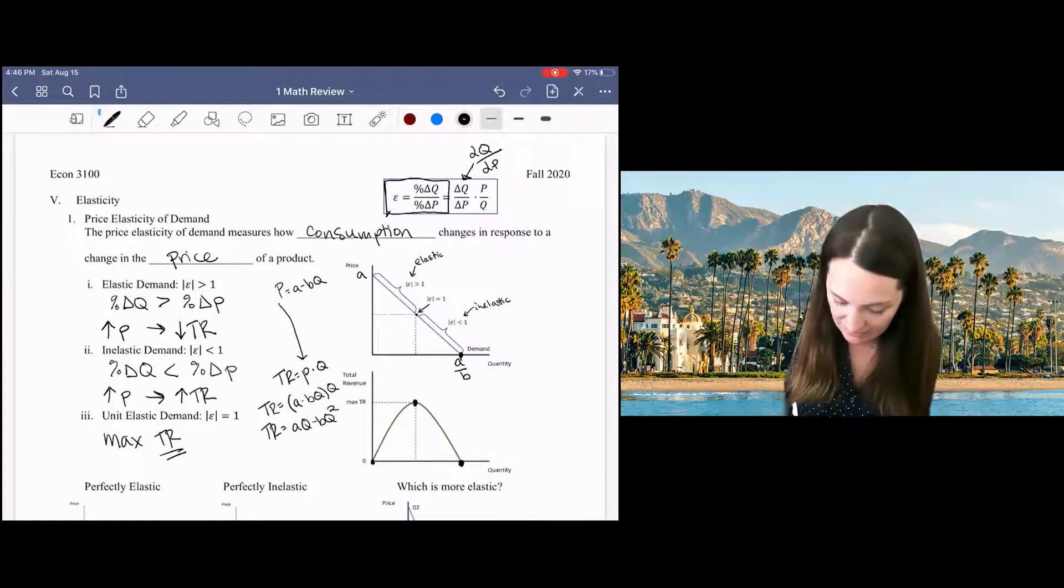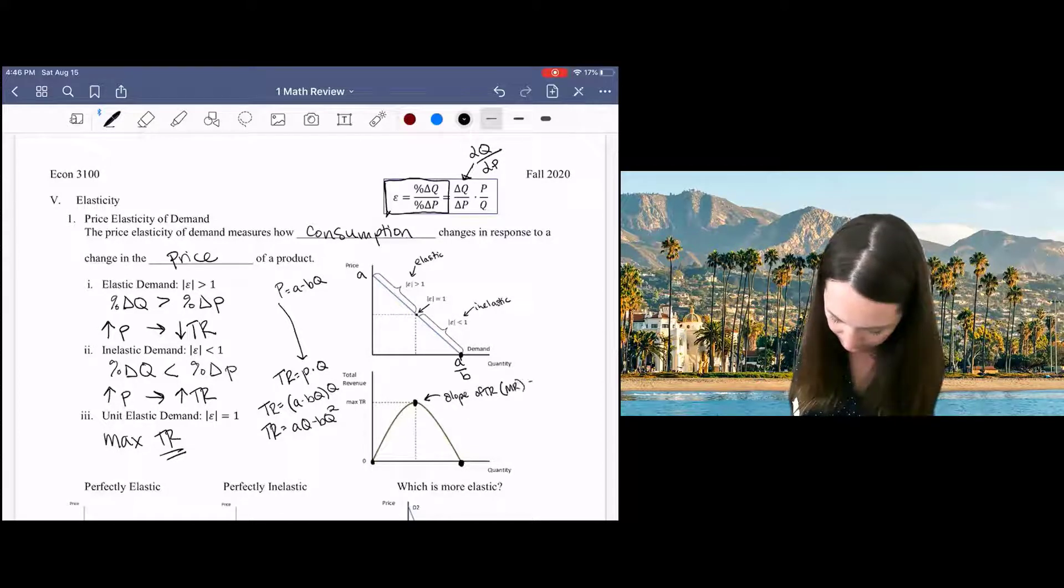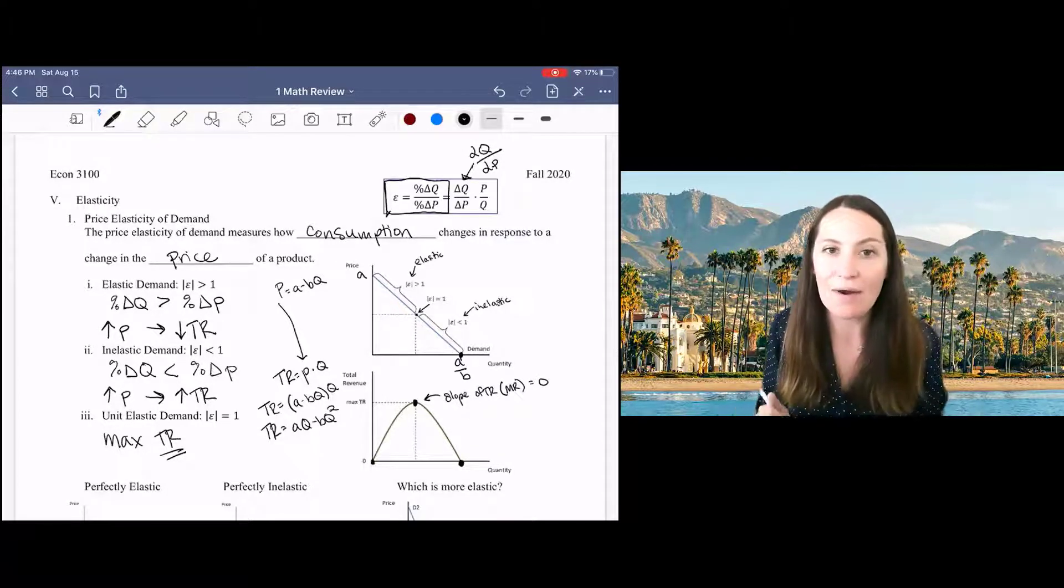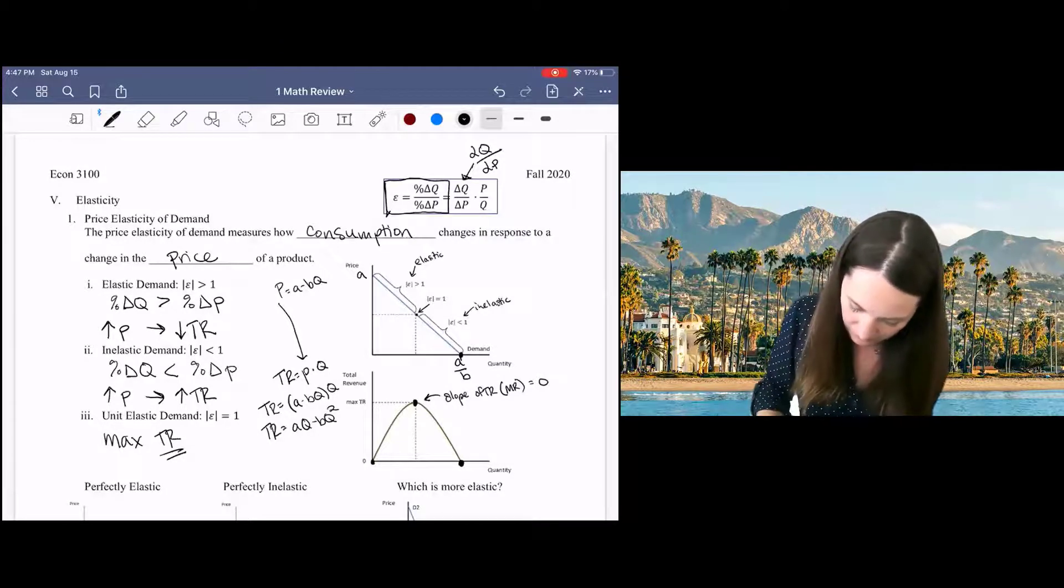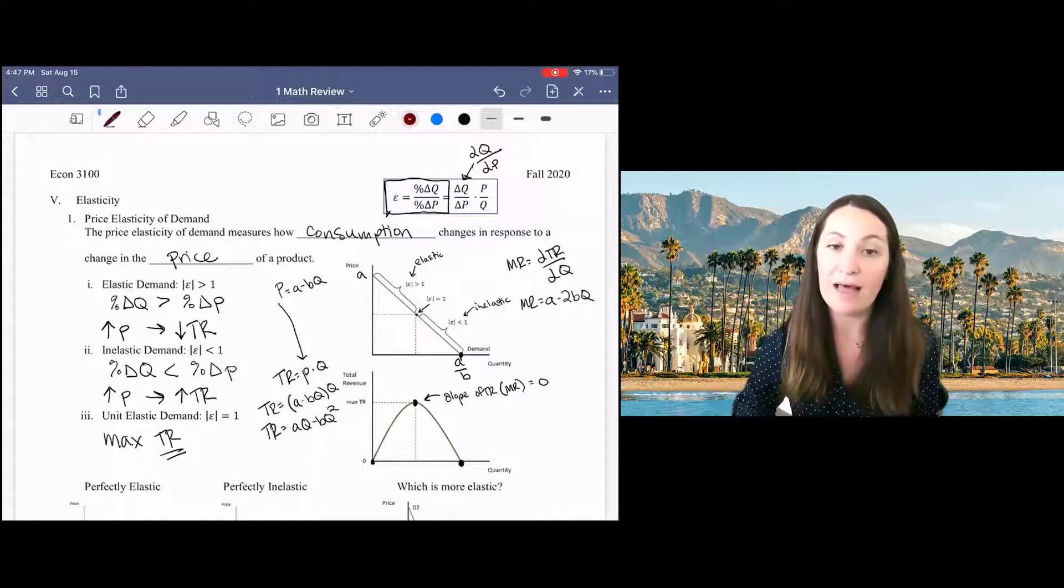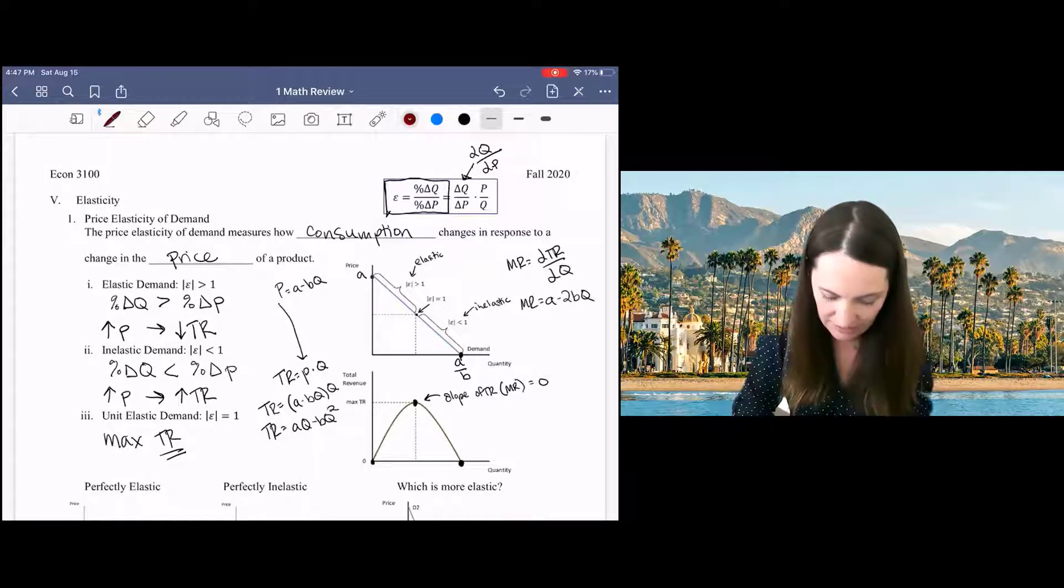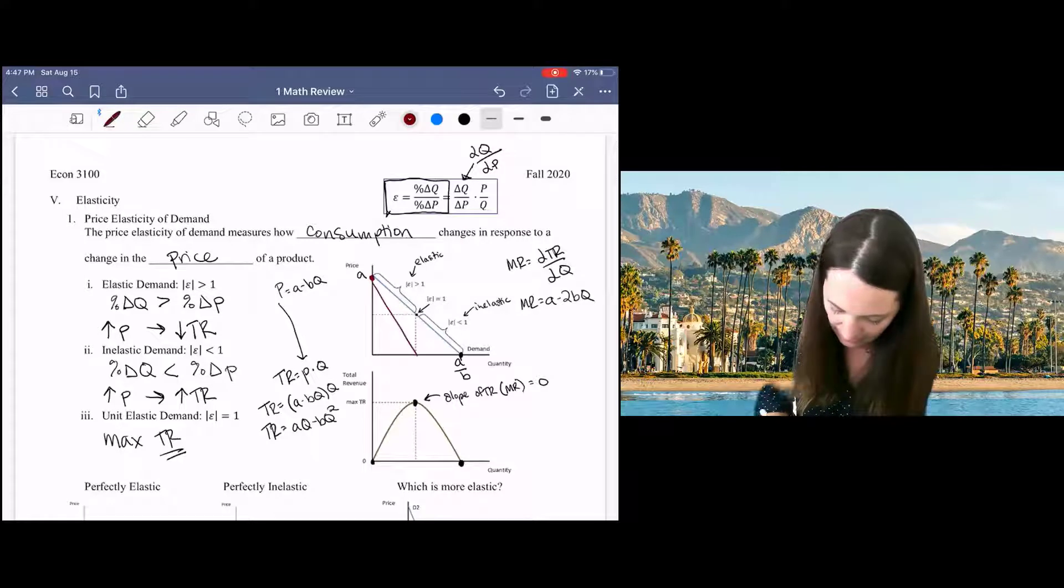And so, at this point, the slope of total revenue, which is marginal revenue, will equal zero. So we can figure out where this point is now using calculus. We can just take total revenue, find marginal revenue by finding the derivative with respect to quantity. That's going to be A minus 2BQ. And you're probably used to showing that on the graph with the demand curve. Starts at the same intercept as the demand curve. It's got twice the slope, so it's going to go to zero here at this point, half of the x-intercept.